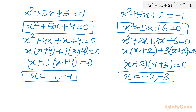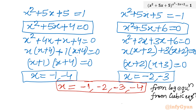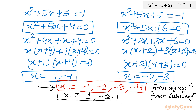Combining results from Method 2: the log equation gives x = -1, -2, -3, -4, and the cubic equation gives x = 1 and x = -2. The overall solution set is x = ±1, -2, -3, -4 — consistent with Method 1.